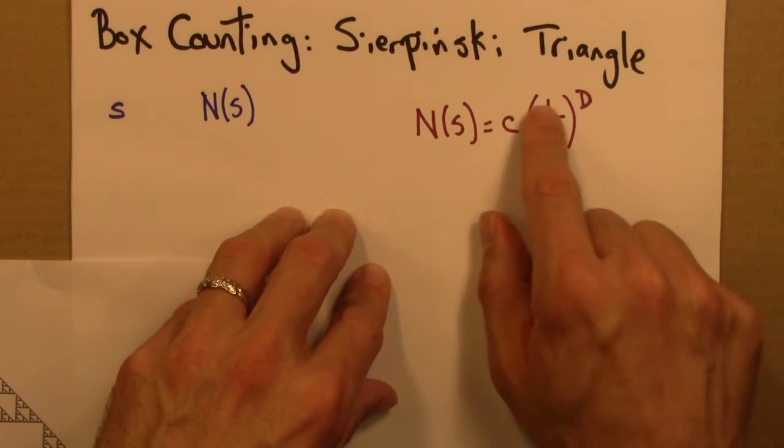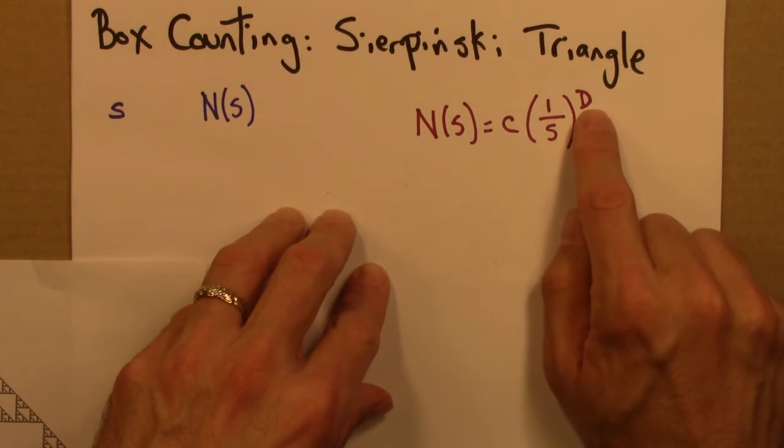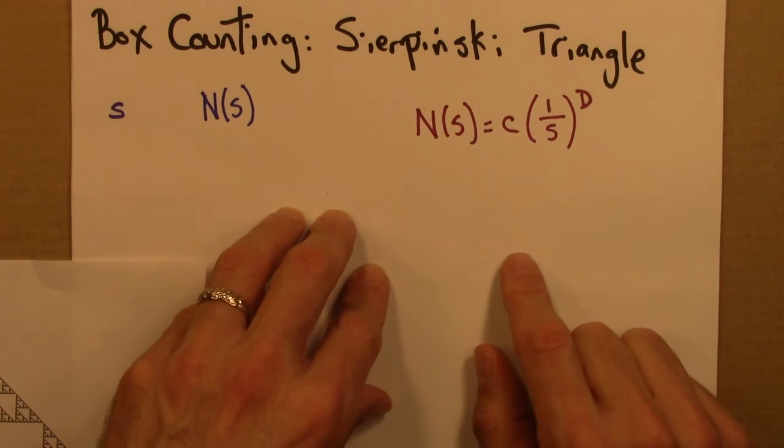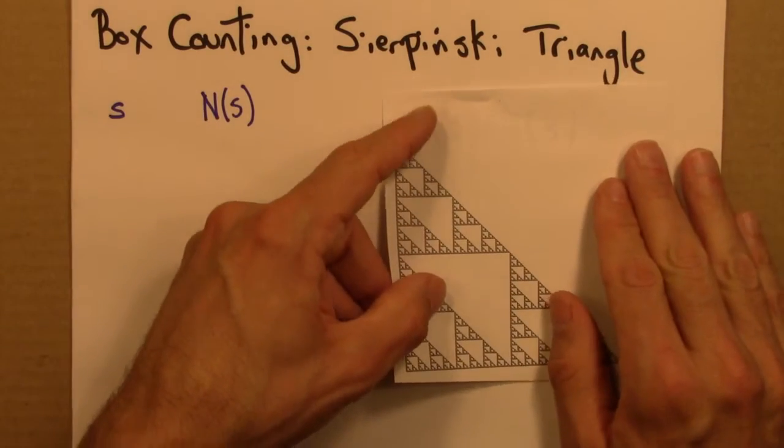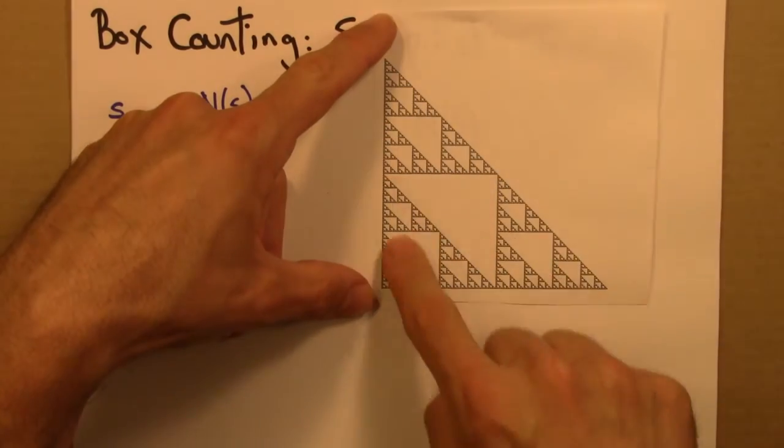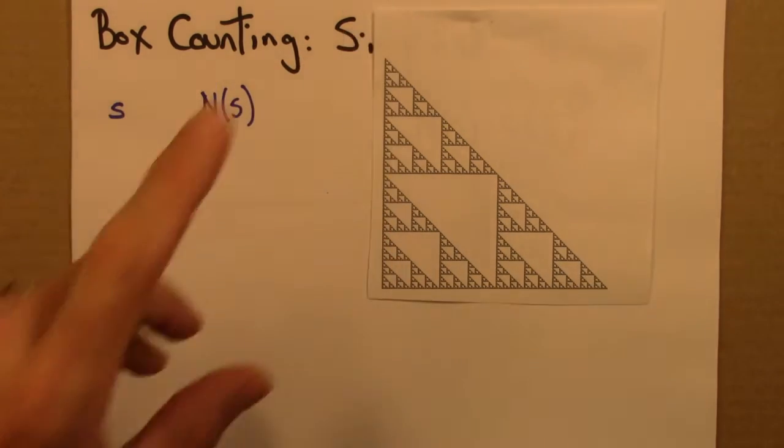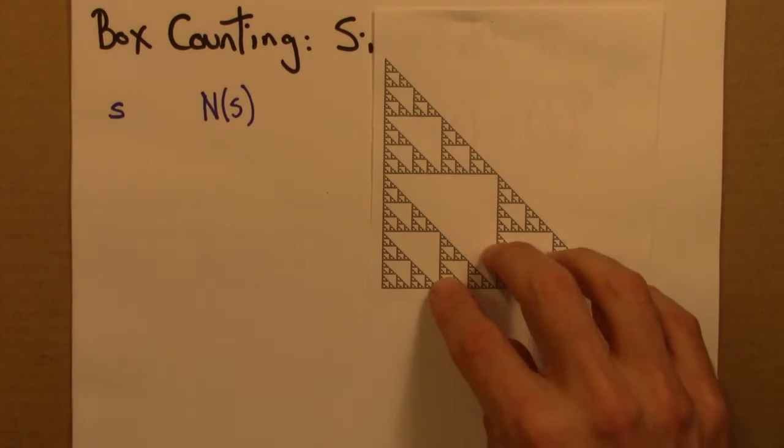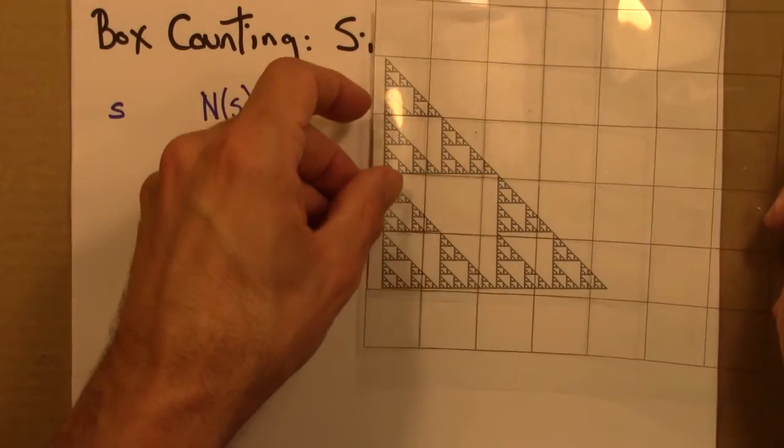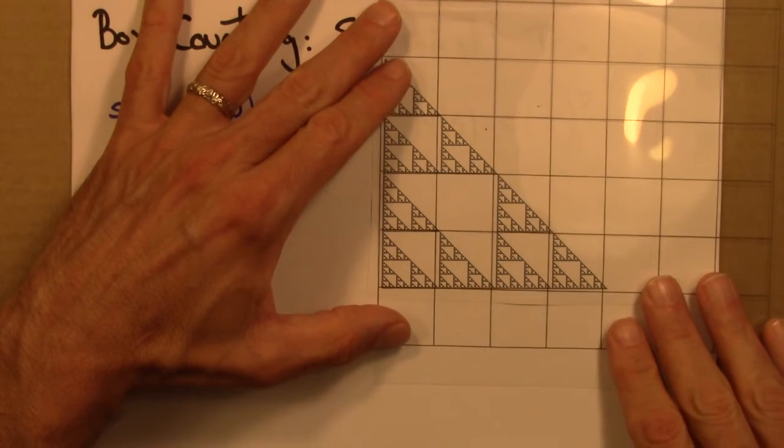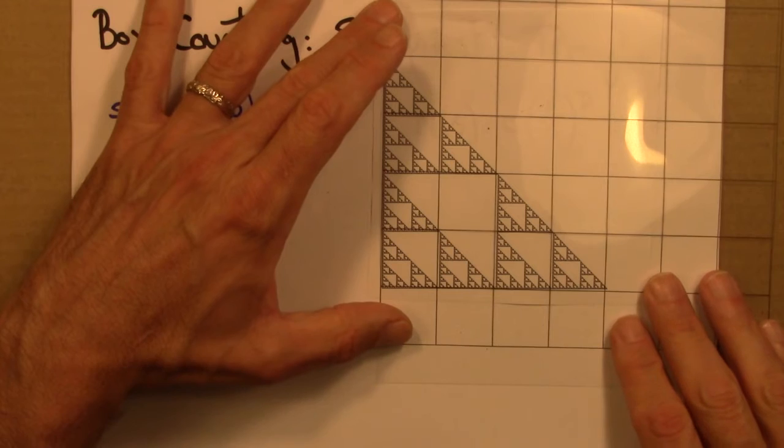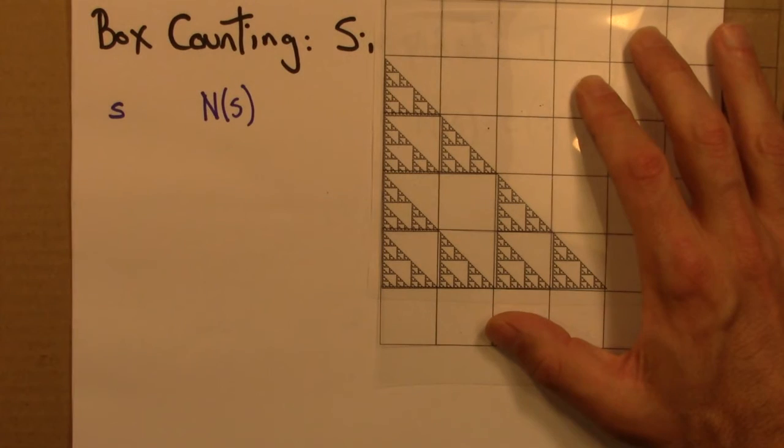So let's do box counting for the Sierpinski triangle, calculate this dimension, and we'll compare that to the self-similarity dimension. So here is a Sierpinski triangle, and I've made this a right triangle now because it'll be easier to do, much easier to count boxes in this form. If I line this up just like so, I can now count boxes. So the side here is a quarter.